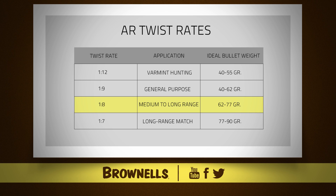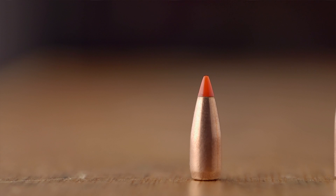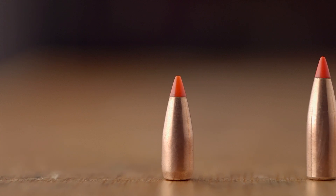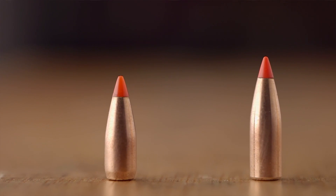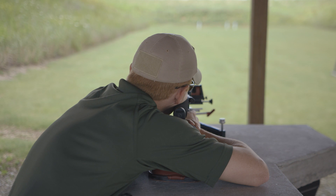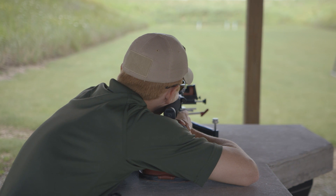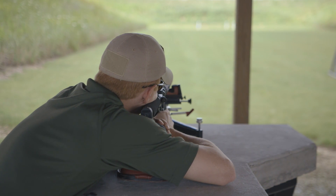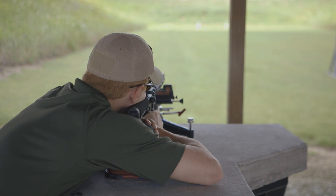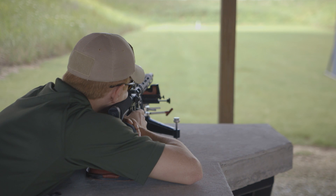Moving up to the 1-in-8 twist rate gives your AR the capability to stabilize many of the heavier military and match loads for long-range shooting. The 1-in-8 is at its best with 62 to 77 grain bullets commonly found in these types of loads. On the other hand, lighter bullets 55 grains and below will not perform as well. At close range you may not even notice a difference, but if you're trying to shoot varmints at long range with light bullets, this is probably not the twist for you.